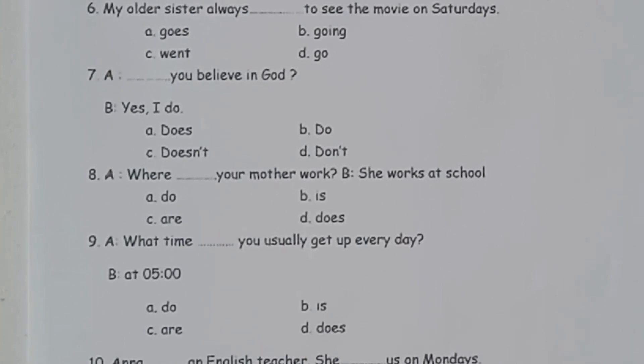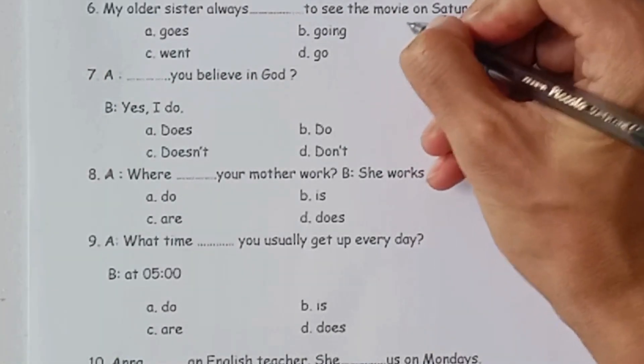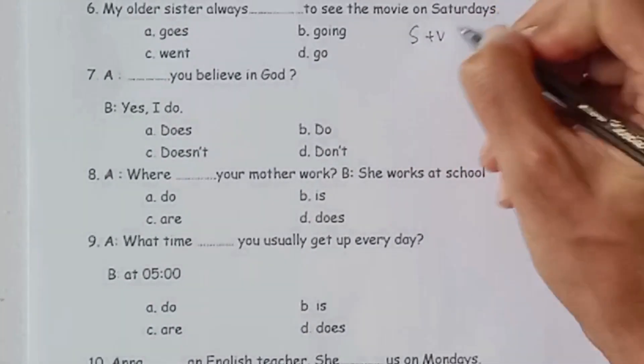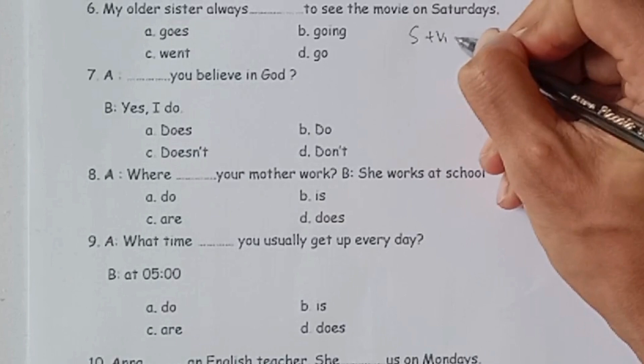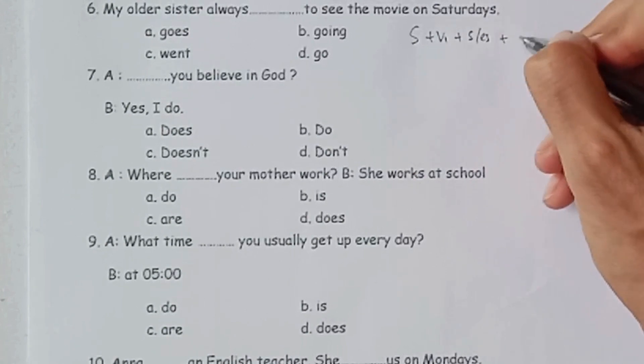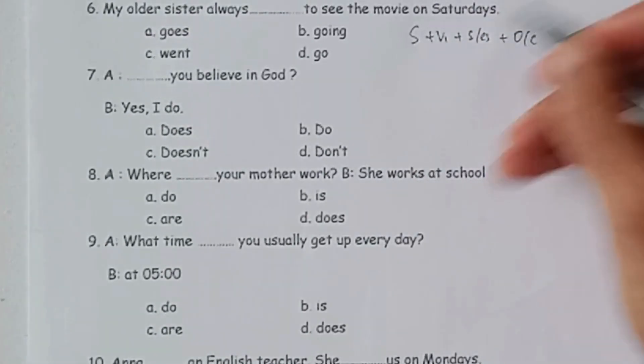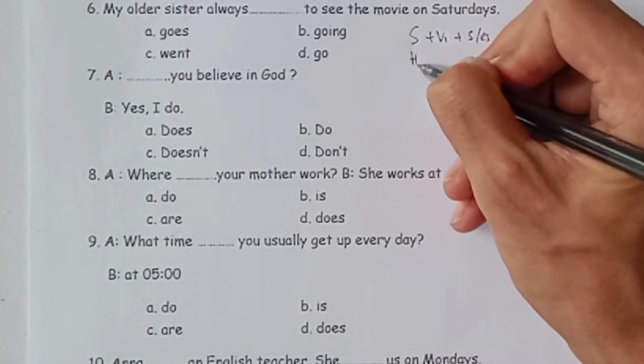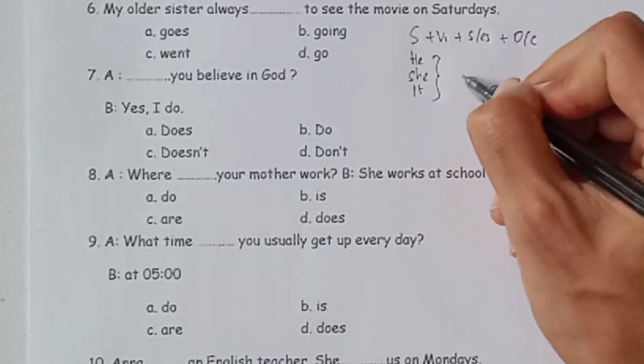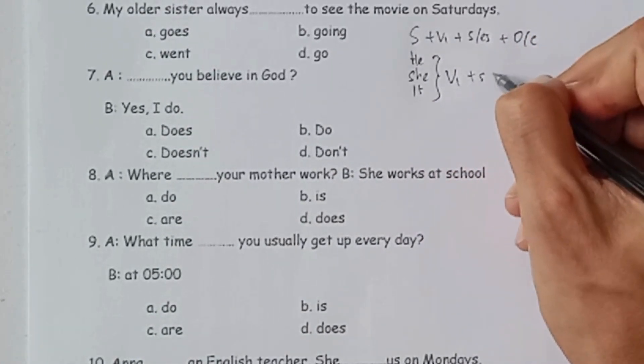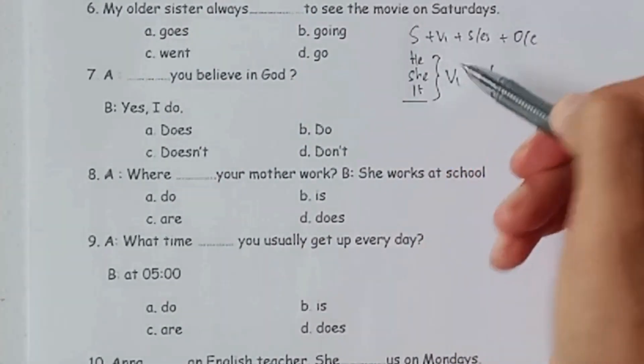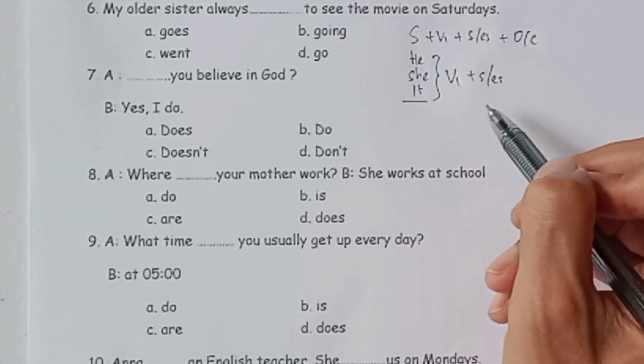Okay, saya akan menjelaskan kembali untuk rumus atau formula dari Simple Present Tense. Seperti ini ada subject, kemudian ada verb bentuk pertama, kemudian ditambahkan S atau ES, kemudian object or complement. Nah, subject ini kalau dia he, she, atau it, maka kata kerjanya ditambahkan S atau ES. Selain daripada tiga subject ini, maka kata kerjanya tidak ditambahkan apa-apa.